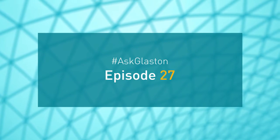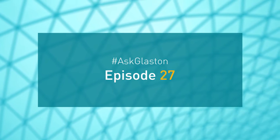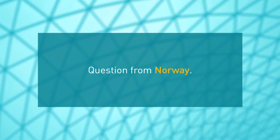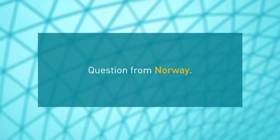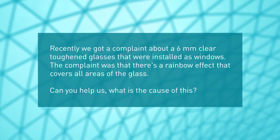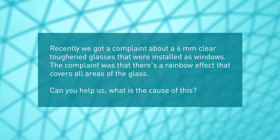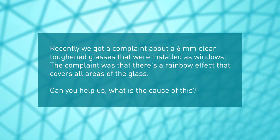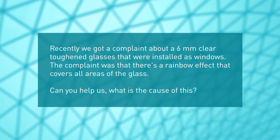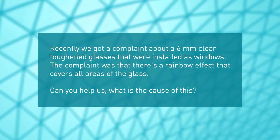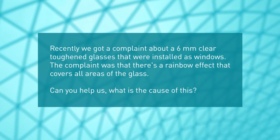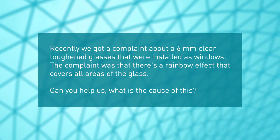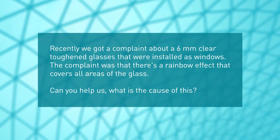Ask Glaston, episode 27. Question from Norway: Recently we got a complaint about a six millimeter clear toughened glass that was installed as a window. The complaint was that there's a rainbow effect that covers all areas of the glass. Can you help us? What is the cause of this?